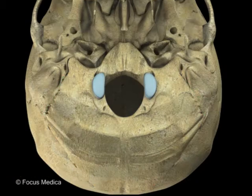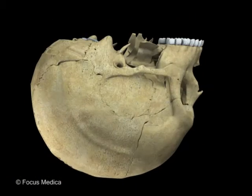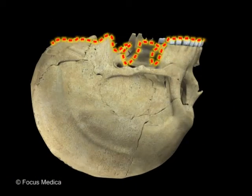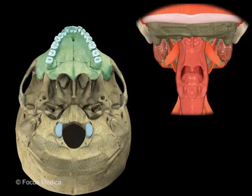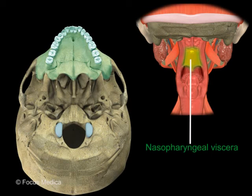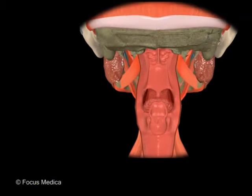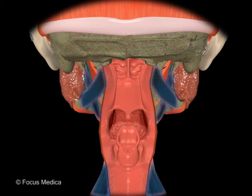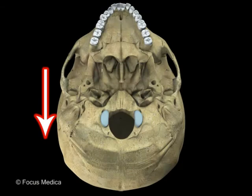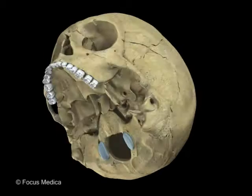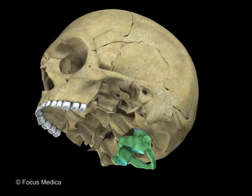The surface of the skull base is highly undulated. Anteriorly, it gives attachment to the nasopharyngeal viscera. Around this are the neck muscles and ligaments. More posterior are the joints with the atlas vertebra.